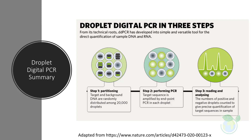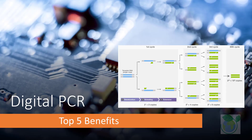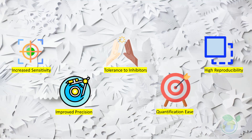DDPCR technology can be used for extremely low target quantitation from variably contaminated samples, which would otherwise likely lead to undetectable target levels. When using DDPCR technology, reference gene normalization is always recommended for gene expression analysis.